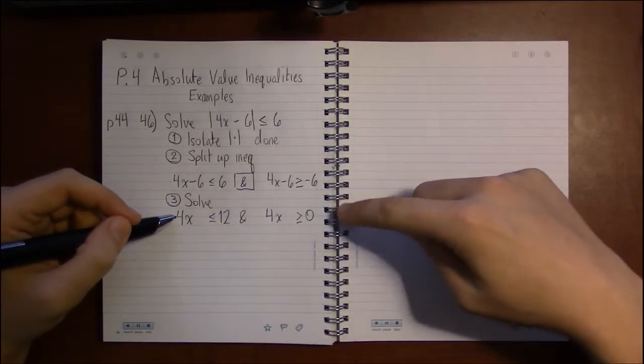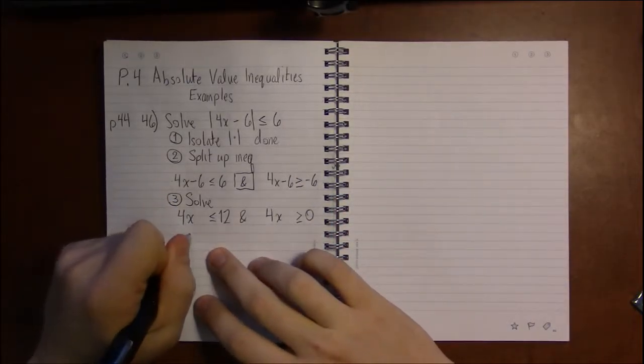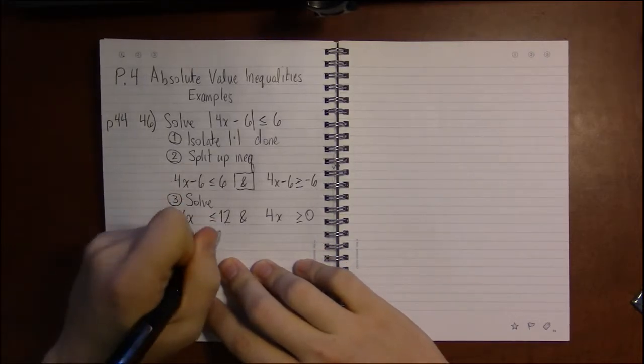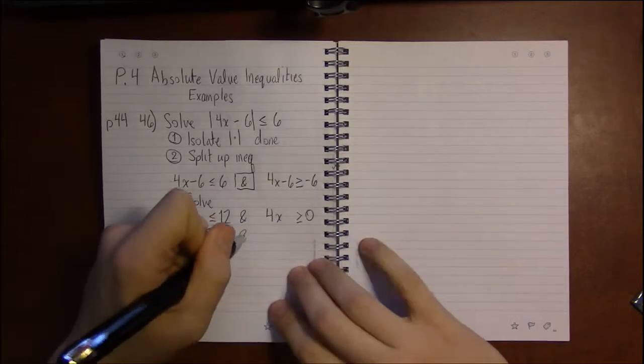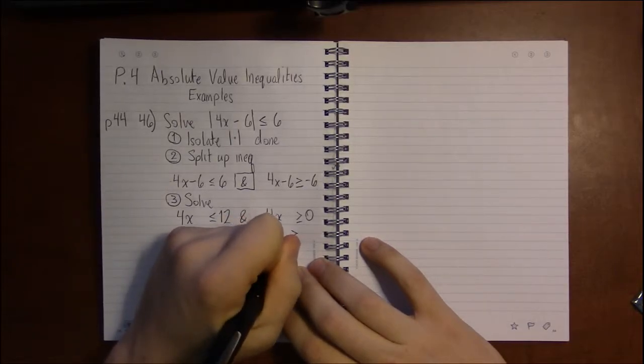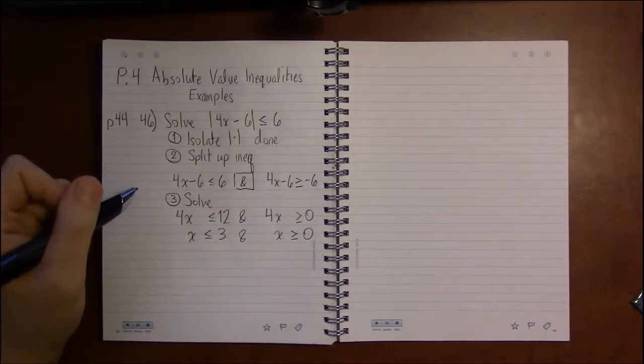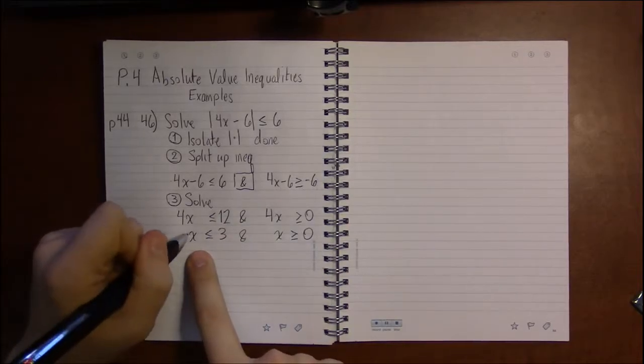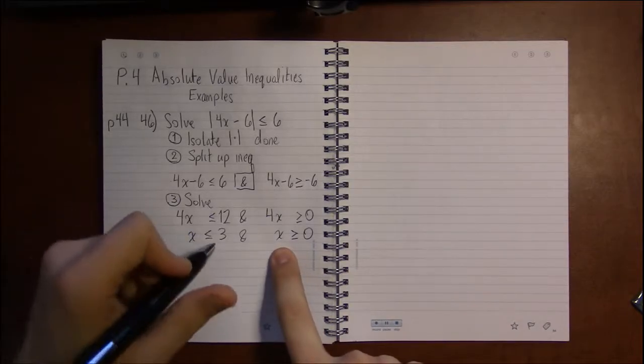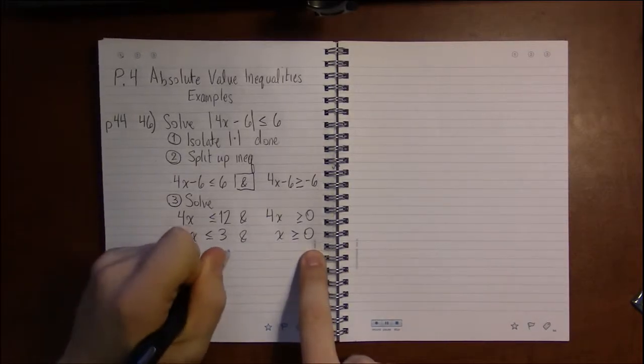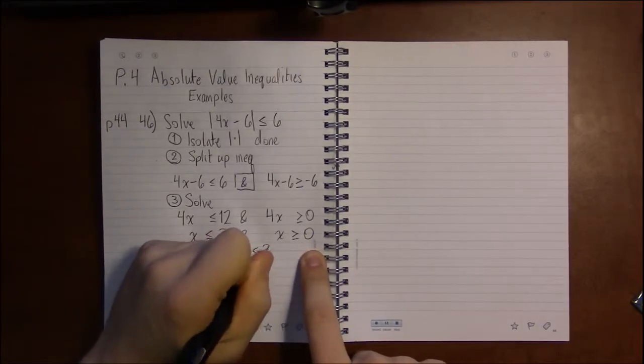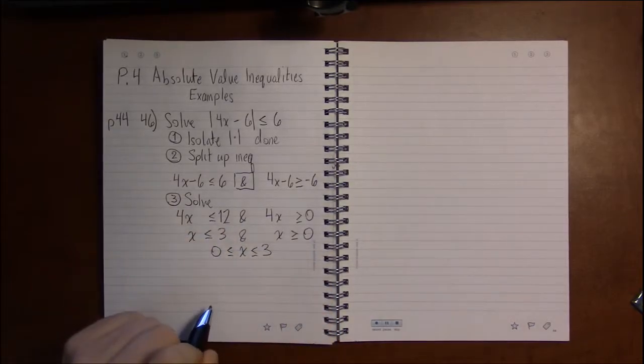Now it looks like I should be dividing by 4. x is less than or equal to 12 over 4, which is 3. Here, 0 divided by 4—well, 0 divided by any non-zero number is just 0. So x should be less than or equal to 3, and it should be greater than or equal to 0. Well, that tells me that x is between 0 and 3, and we include these two endpoints.